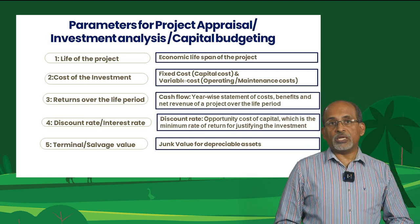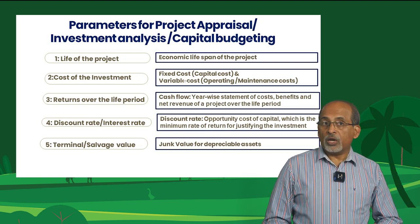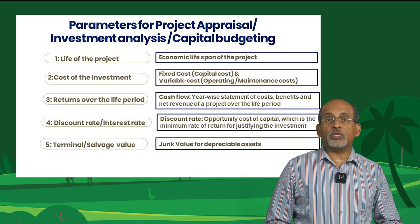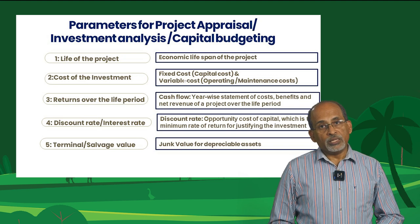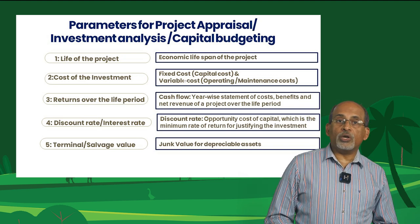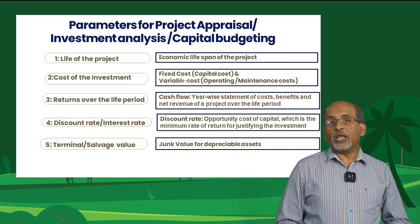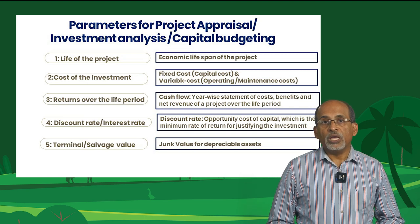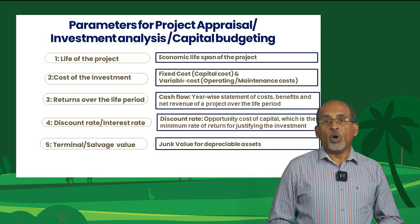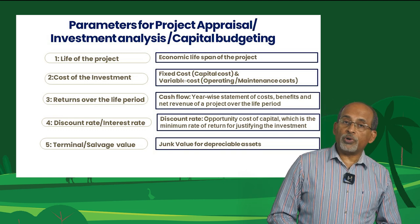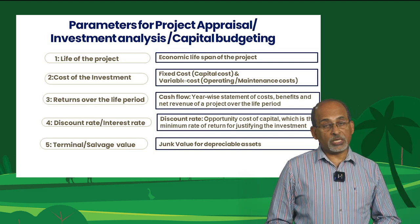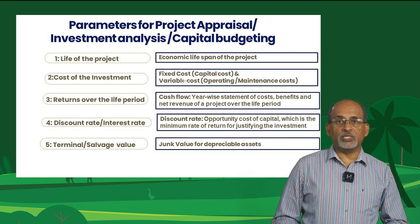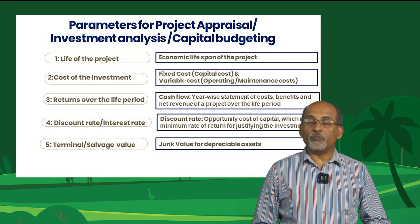Investment on capital assets involves a longer period of time. Then we need to know about the operational and maintenance cost. These are costs incurred on seeds, feed, fertiliser, and labour — we can say it is the operating investment. Investment in operating expenses occurs within one production cycle or within a year or sometimes less. The fourth parameter is gross returns generated over the life period of the project.